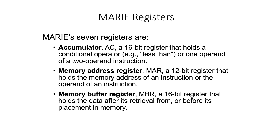The second register is the memory address register, shortened to MAR. That is a 12-bit register that holds the memory address of an instruction or the operand of an instruction. The third register is the memory buffer register, shortened to MBR. This is a 16-bit register that holds data retrieved from or before placement in the memory.